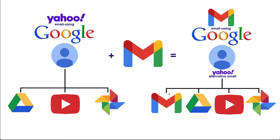I then have Gmail, Google Drive, YouTube, and Google Photos as my products under this Google account. The only difference is that you can sign into this Google account with both the Gmail address and also the alternative Yahoo — or rather, third-party — email address. So this particular Google account has the advantage that you can use both as a sign-in.